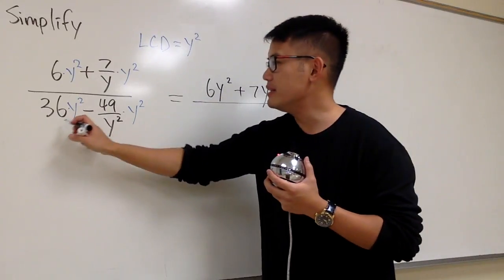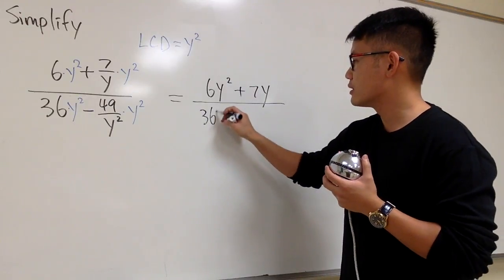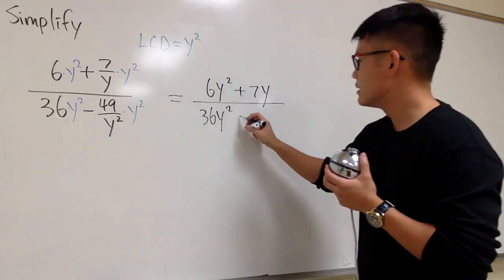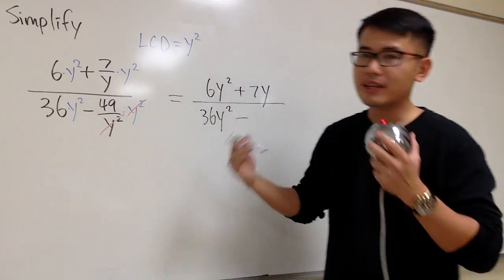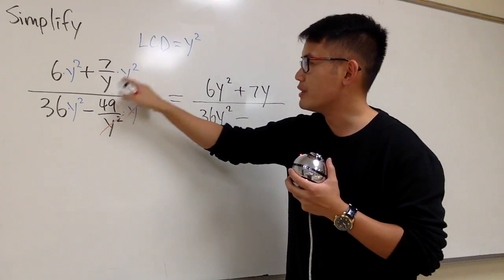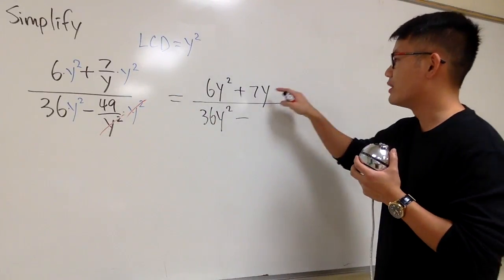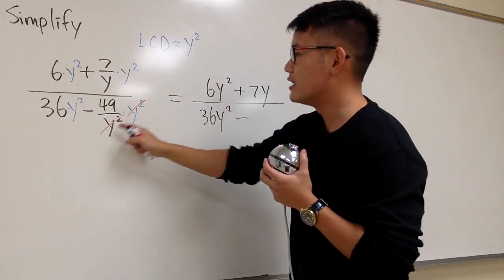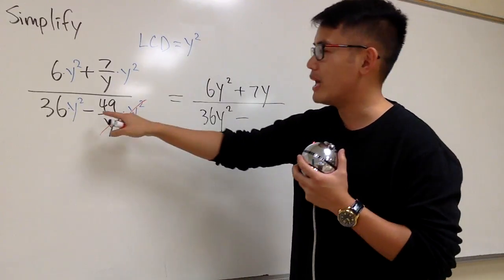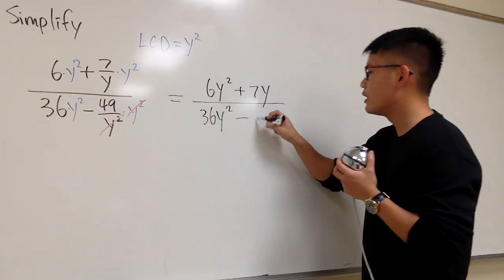Over, this is 36y squared, minus the y squared, y squared, they cancel each other out completely. Earlier, we only canceled one of the y's, so we have 7y. But this time, they cancel each other out altogether. And we have minus 49 right here.